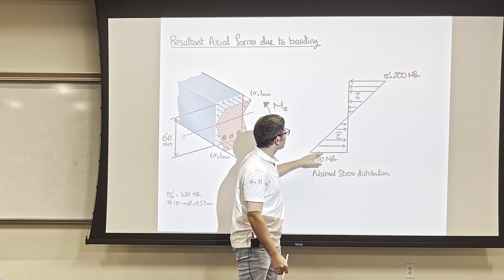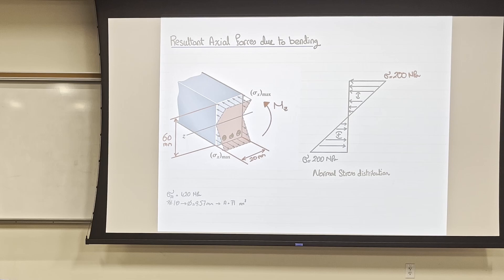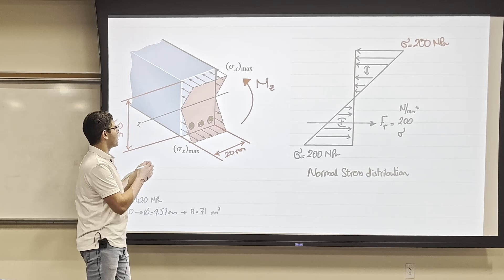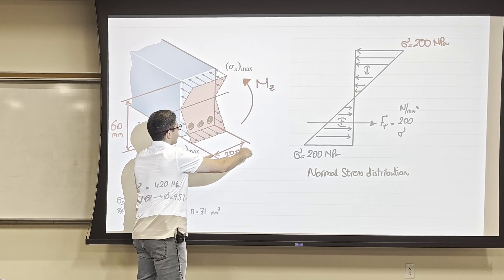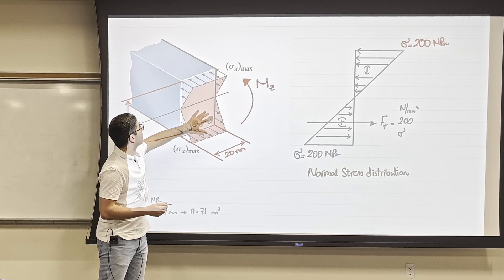We put steel at the tension zone to resist the tension. If we want to find what tension force to design the steel rebars with, we first look at the normal stress distribution of the beam, see the tension side, and convert the triangular stress distribution to an equivalent tension force. So F_tension equals the stress times the area — which is half base times height — times the width of the beam. We're calculating the volume of the stress diagram to get a force.